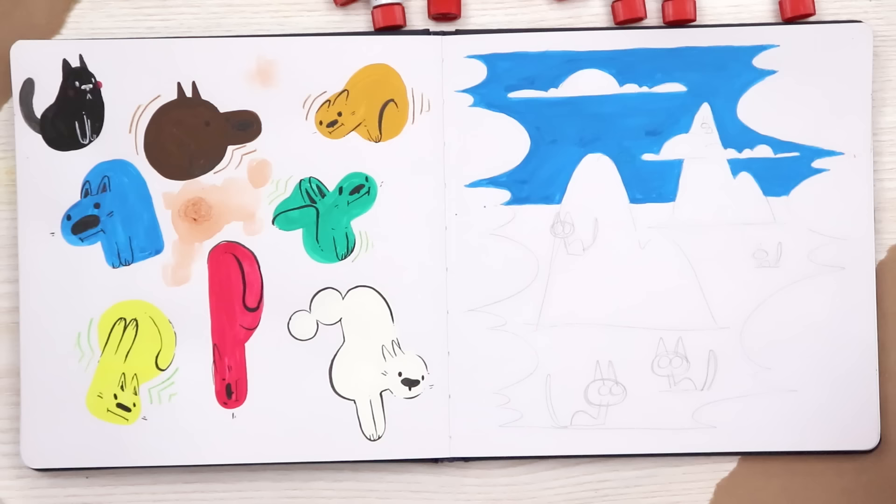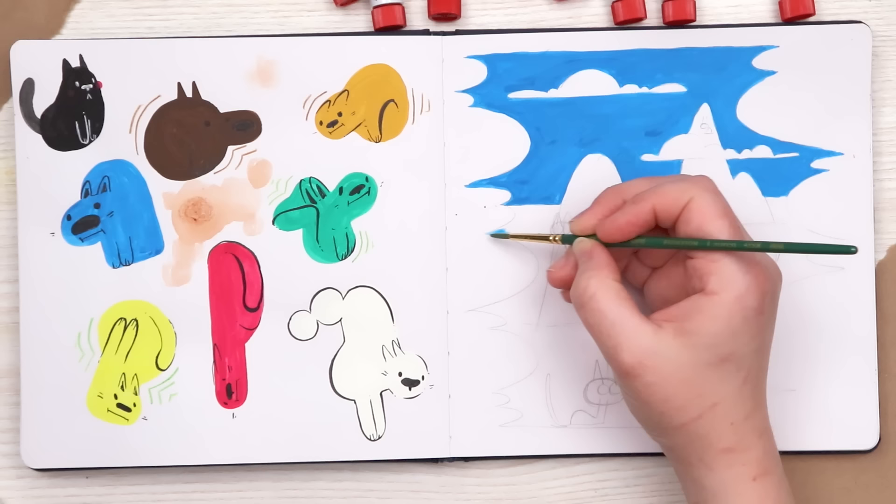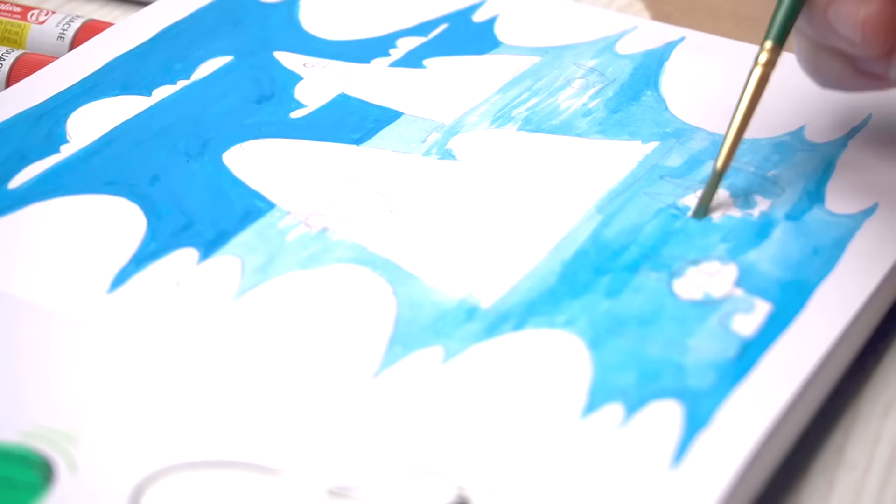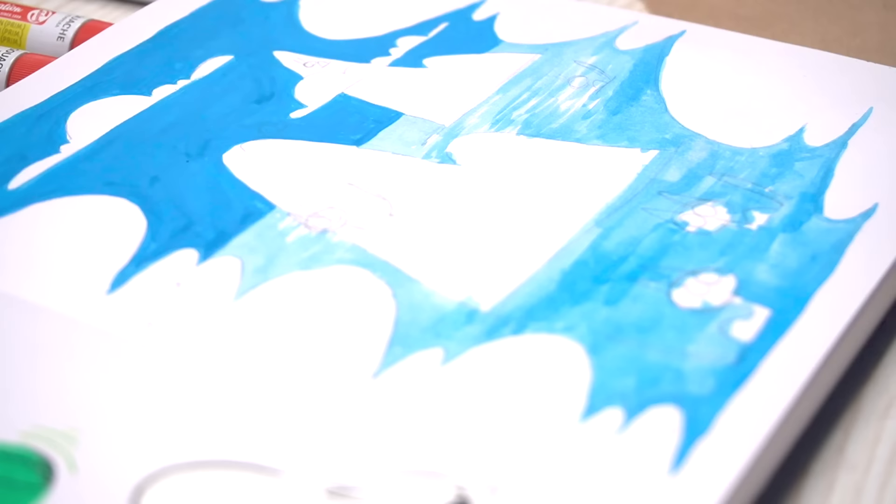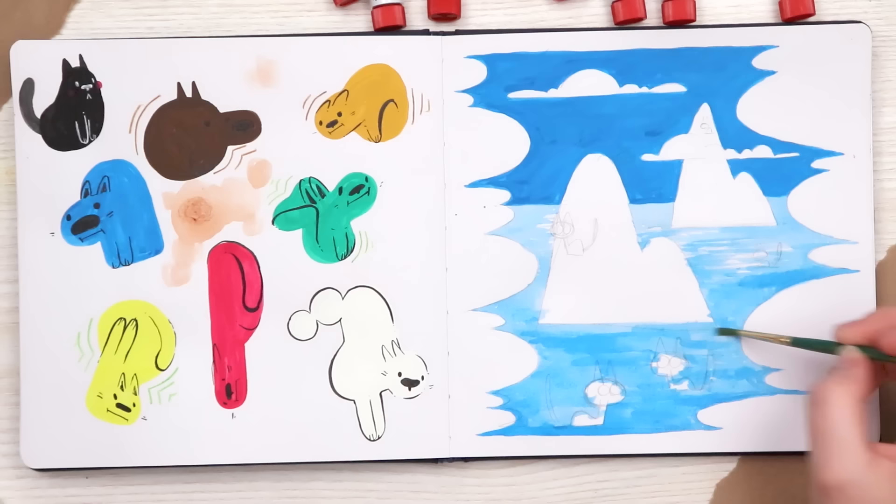Okay, I'm going to use this gouache as if it's watercolor and I'm going to use it very watered down to create our ocean. All right, I think that's about it for the ocean color.